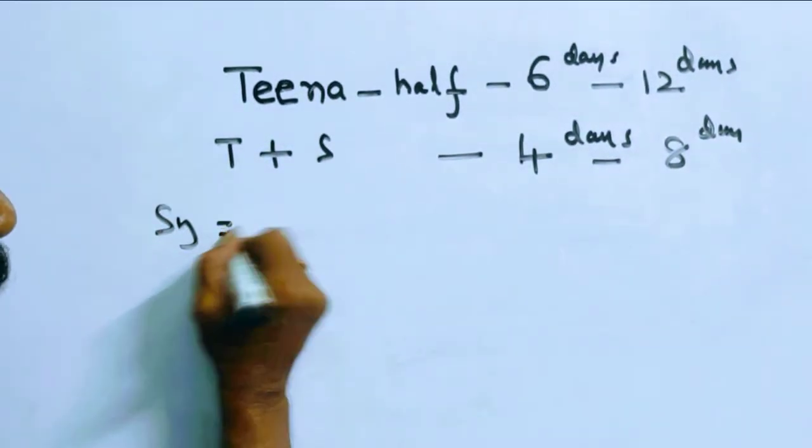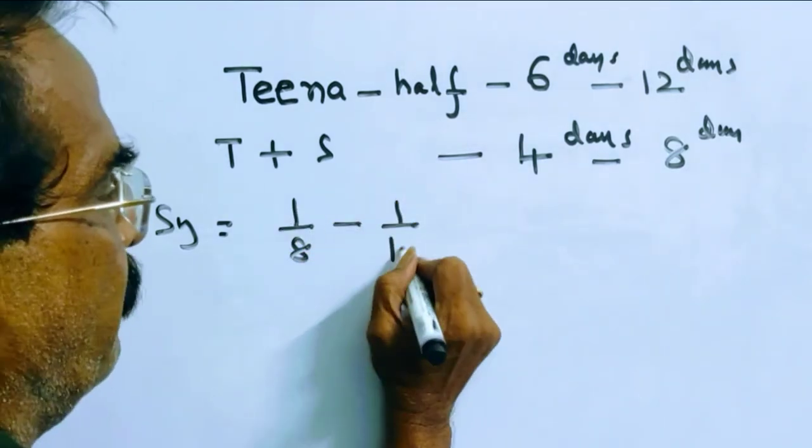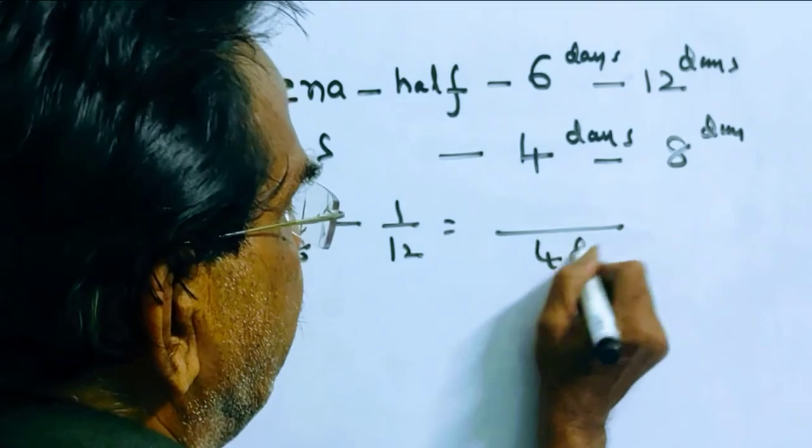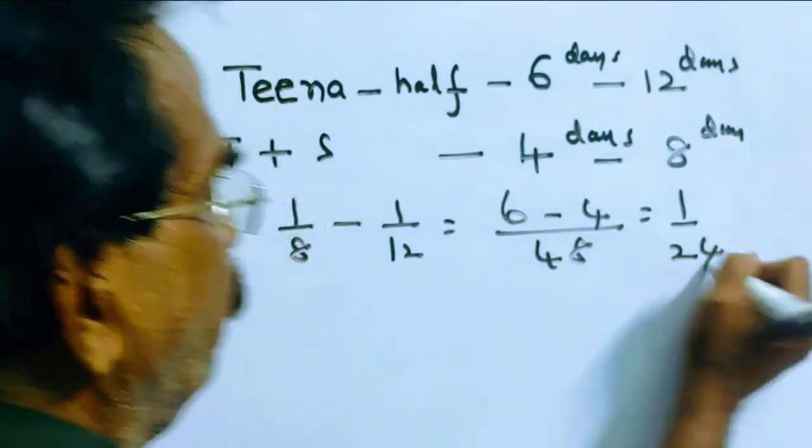Friends, the work done by Sean is equal to 1 by 8 minus 1 by 12. The LCM is 48, so 3 minus 2 gives us 1 by 48, which simplifies to 1 by 24.